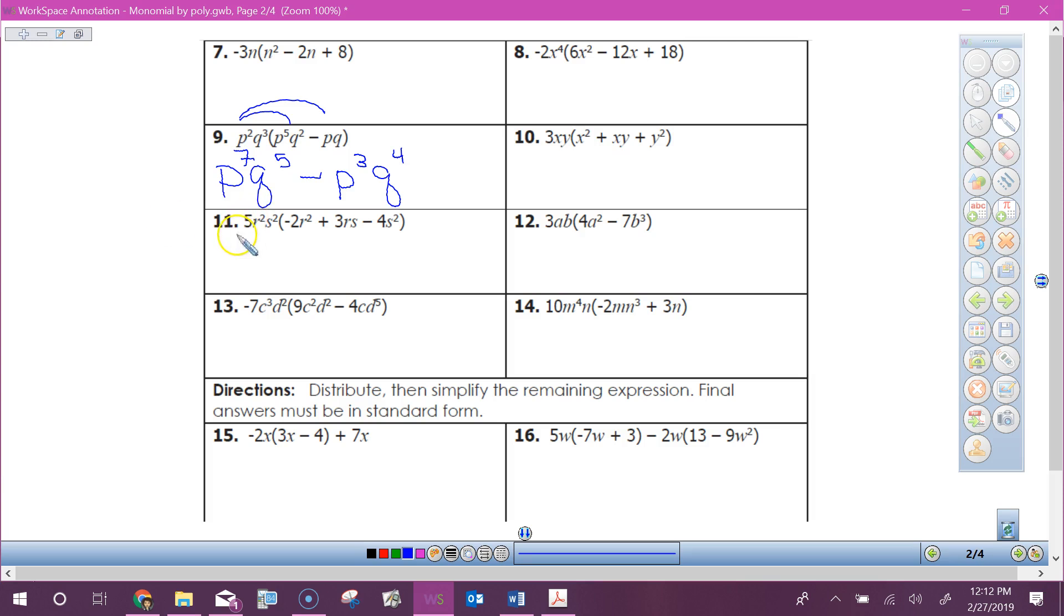Number eleven. We've got to be careful with this one because there's no s's to multiply. So if I multiply in there, I get negative 10r to the fourth. What do I do with my s? It just comes down. It stays as s squared. And then I multiply my next part. What's my sign going to be? Plus.